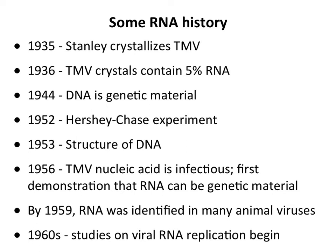By 1959, RNA was found in many animal viruses. When TMV was shown to be infectious, people said it's just a plant virus. But animal viruses joined the group, and finally in the 1960s people really began studying viral RNA replication, which is what we're going to talk about today.